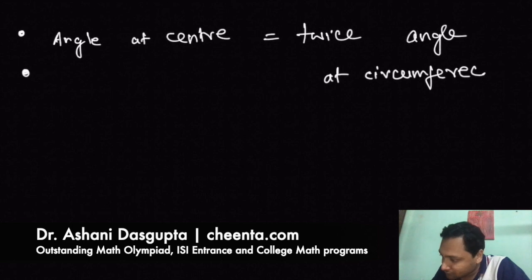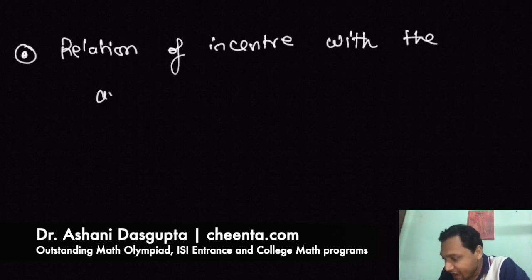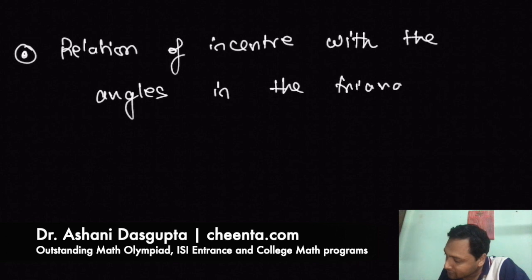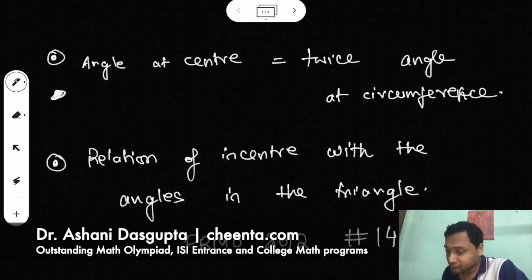And the second one is the relation of incenter with the several angles in a triangle. We will use these two concepts to solve a problem from PRMO 2012, problem number 14. Let's first talk about the first concept.